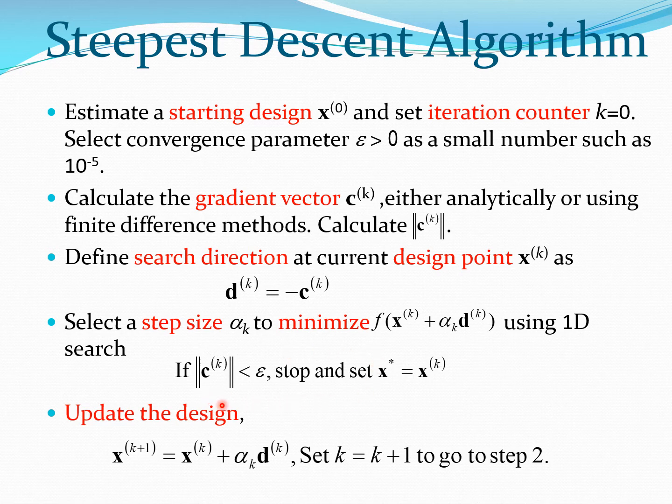once again checks the fact that has the gradient vector become less than this small number. So if the gradient vector is smaller than this particular epsilon, then you stop or you set x* is x^k. x* being the optimal point or the minimum point.